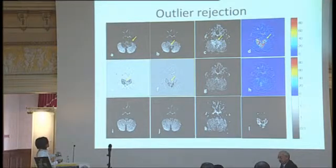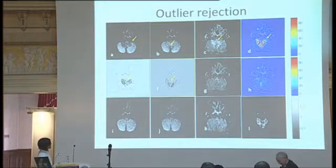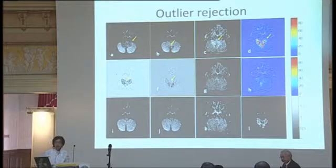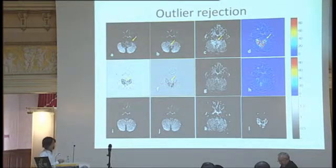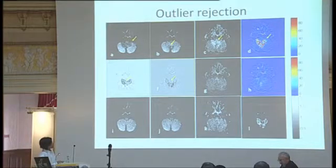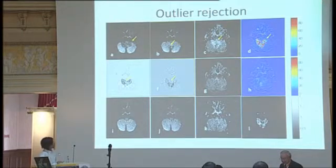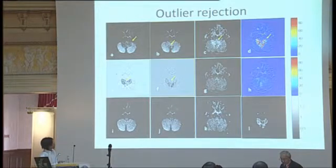Another problem is signal dropout. This image is supposed to look like this reference — and if we subtract them, we can clearly see which pixels have artifact signal dropout. The problem is if you don't have this good reference data set, you still have to identify which pixels are good and which are bad. We look at fitting quality, and those pixels with bad fitting quality should be removed so that the FA map can be corrected.